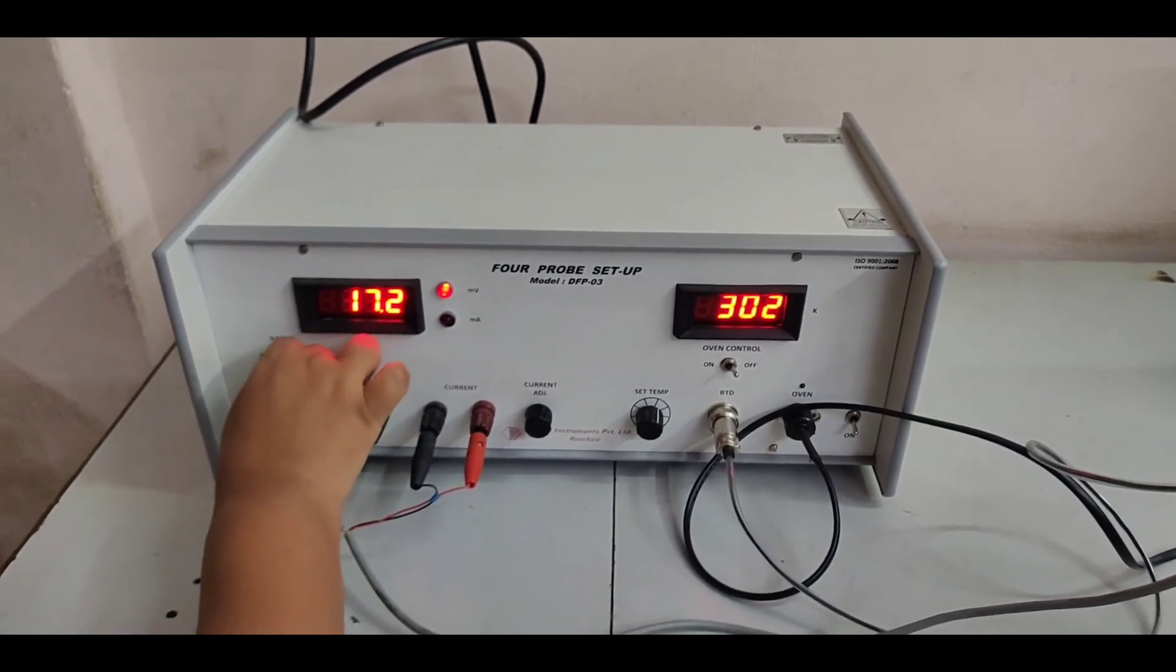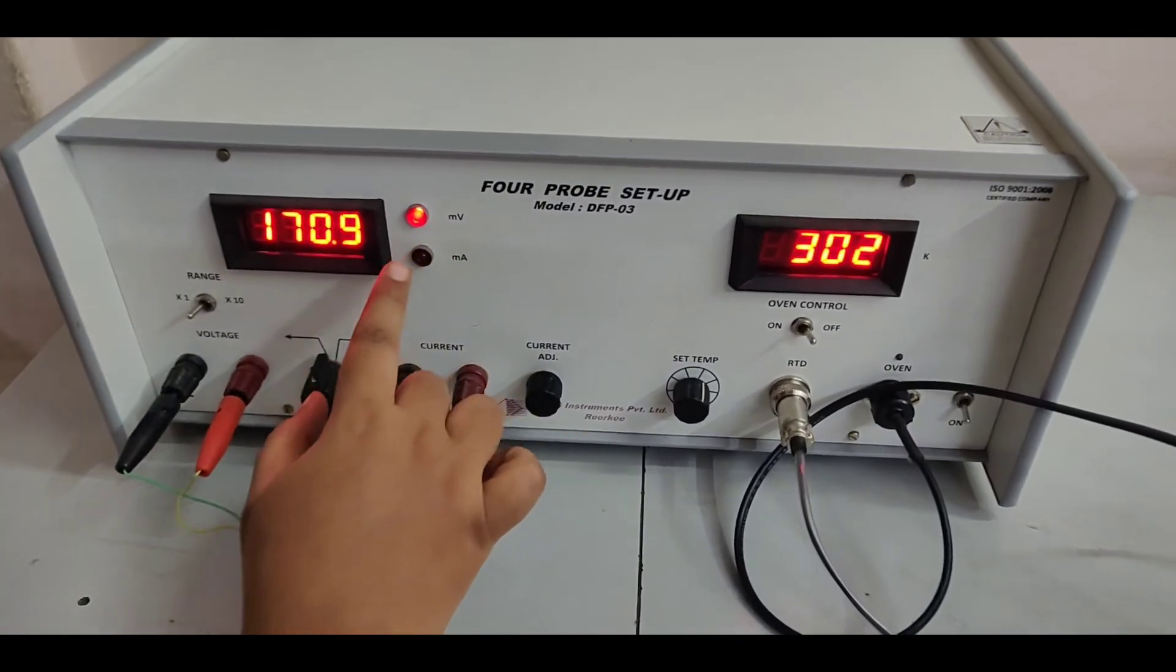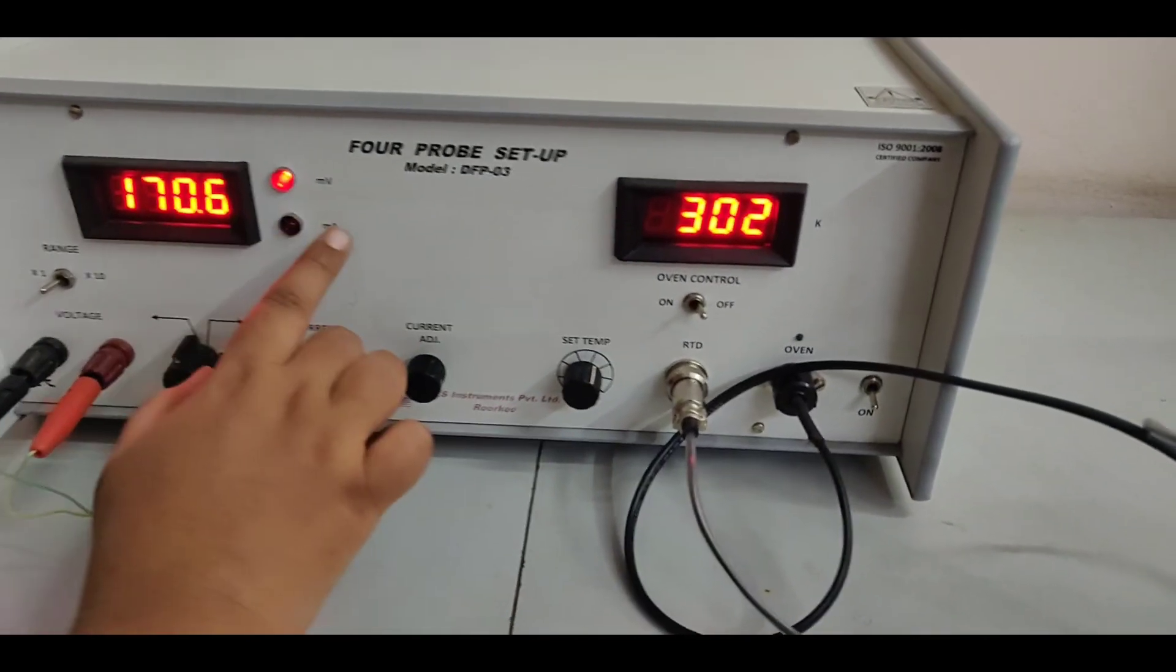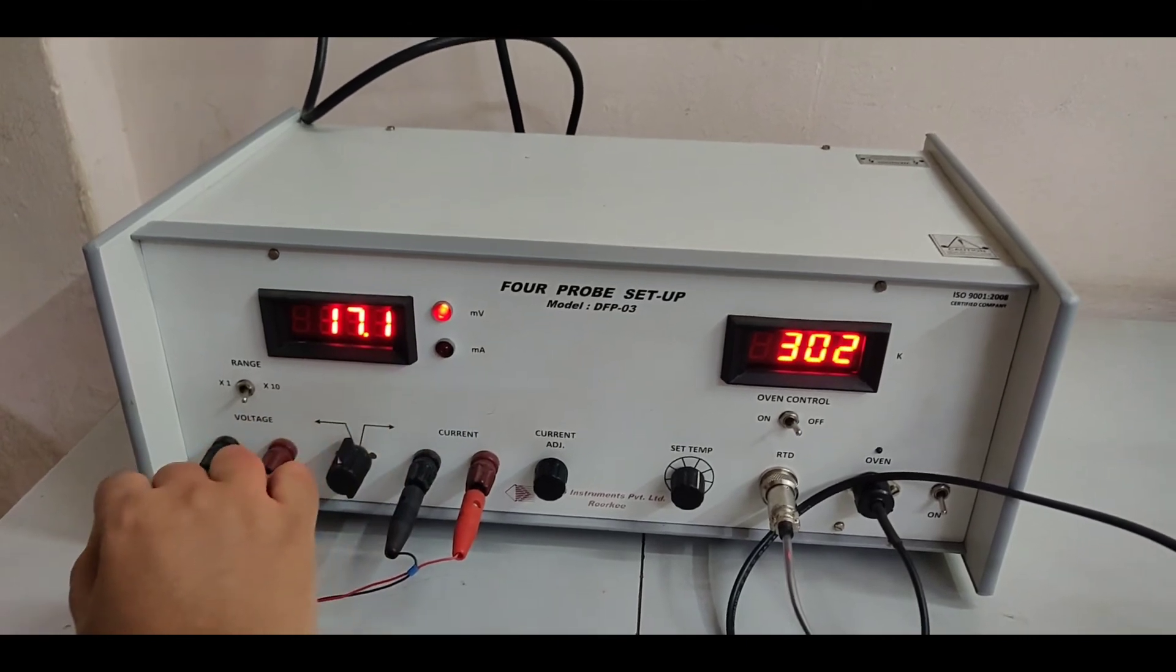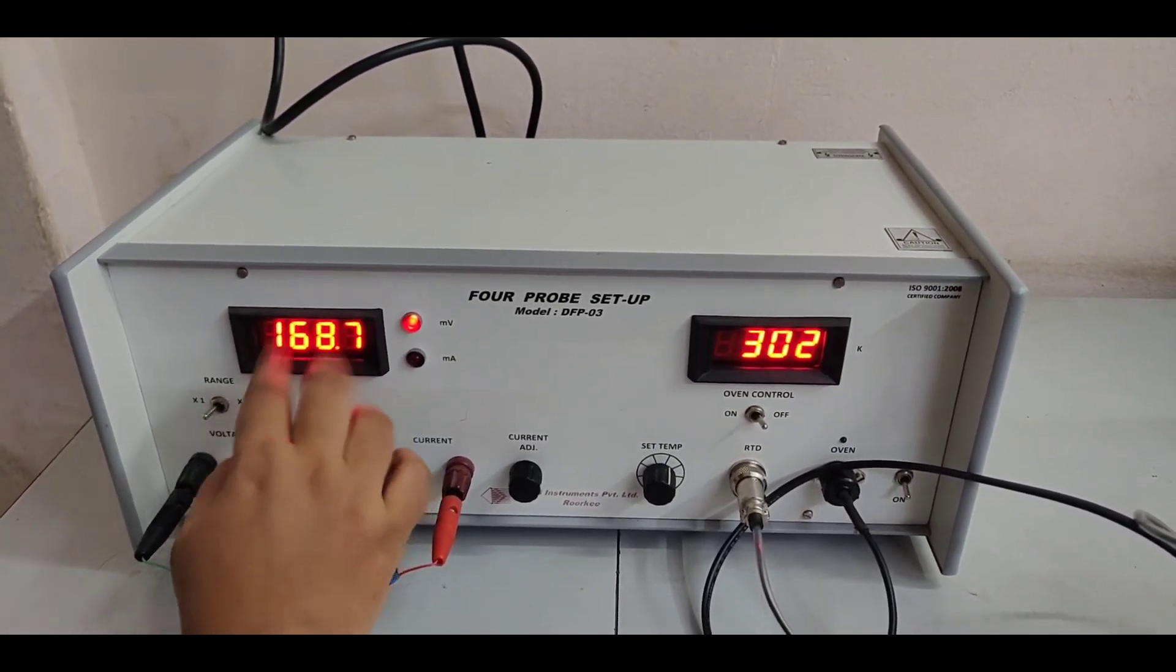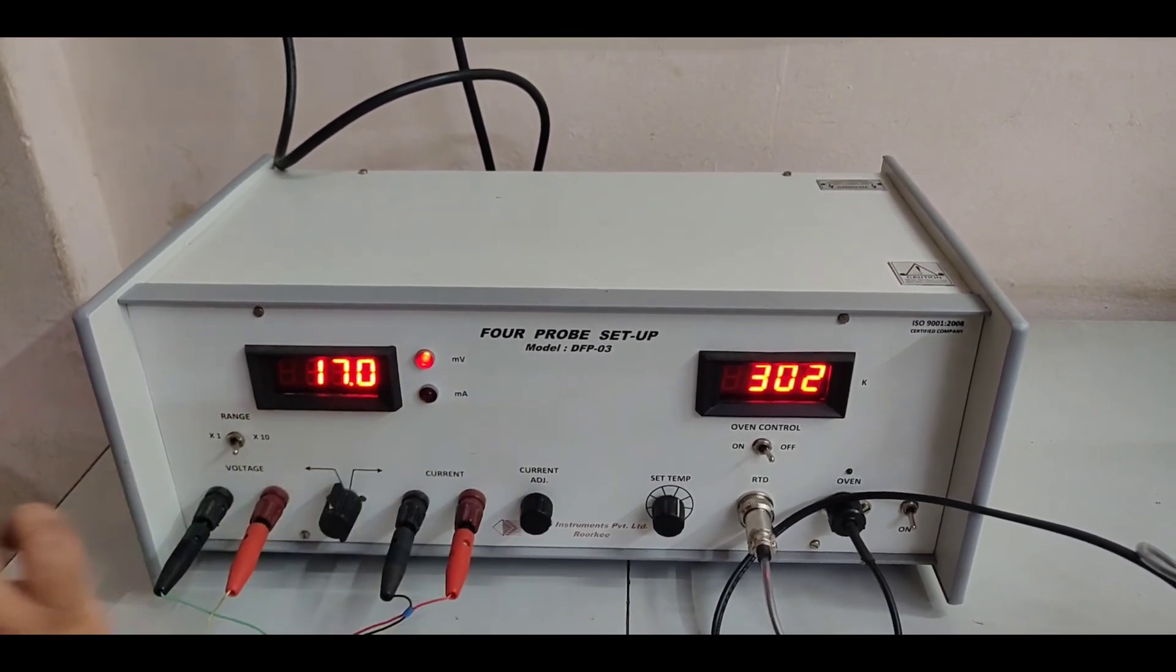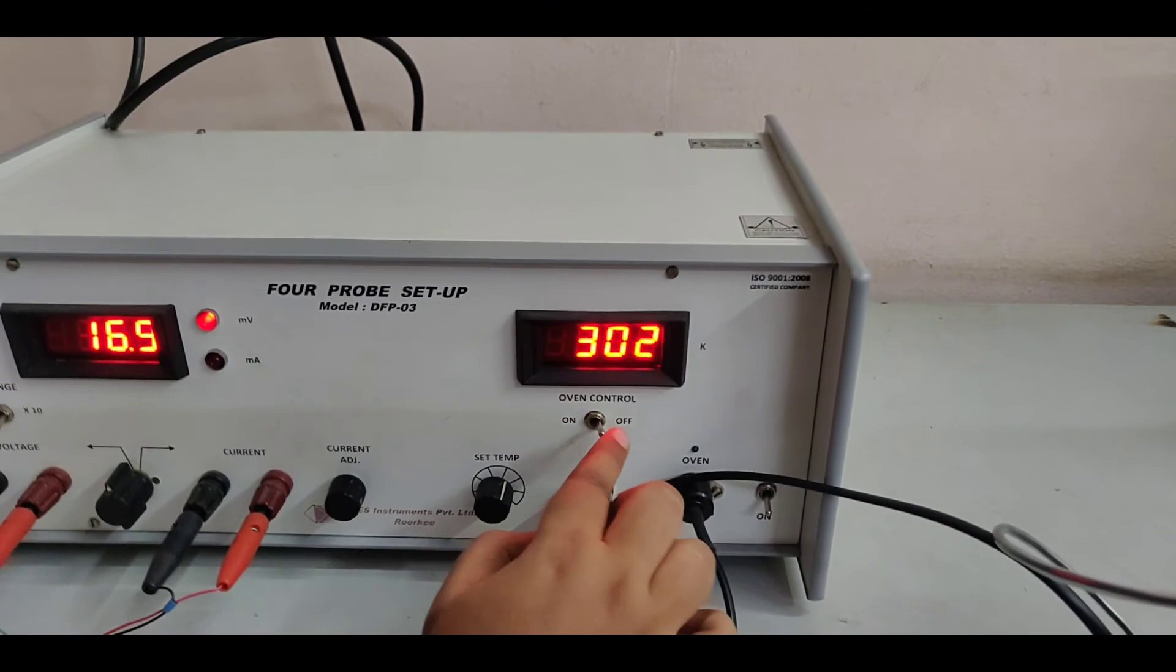When I go into 1, it may read now but later, this is 171 millivolts. But once I start heating, this may go out of range. So we will keep the range into 10 because the reading may go above 1000 millivolts, which is just 1 volt. So keeping it here, we will start heating now.